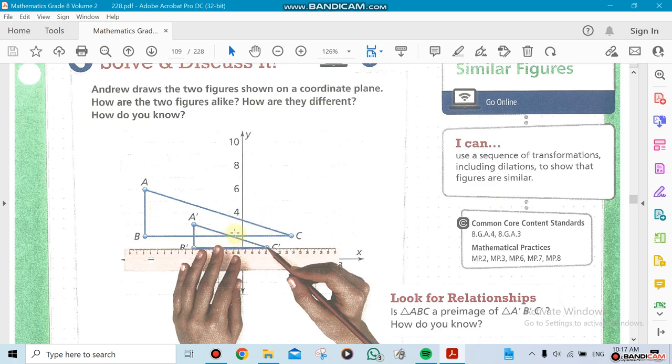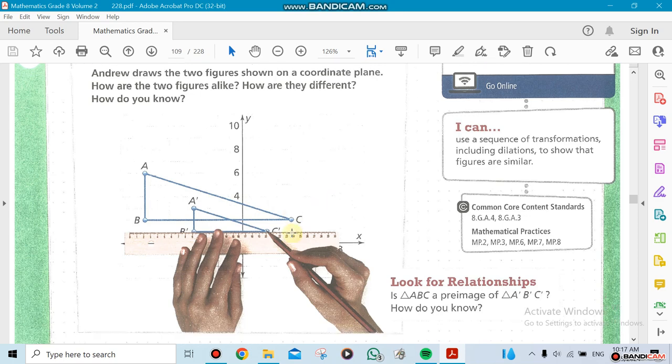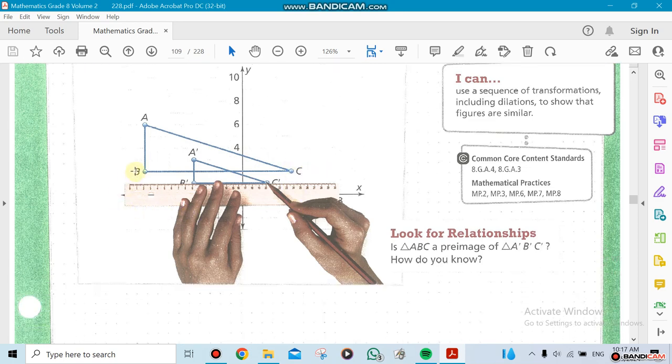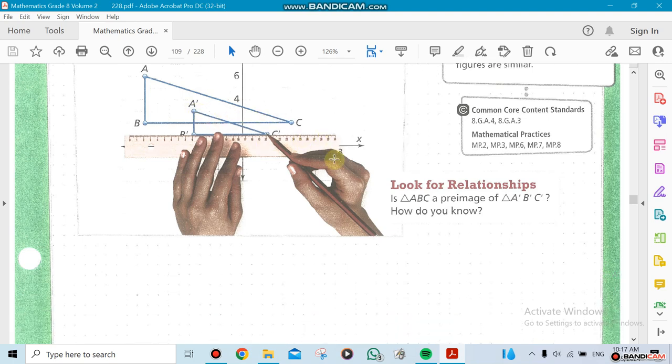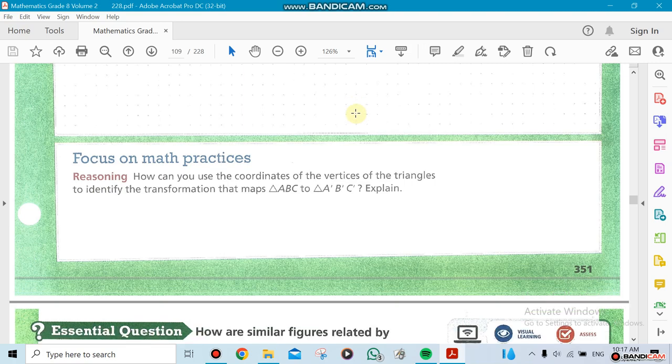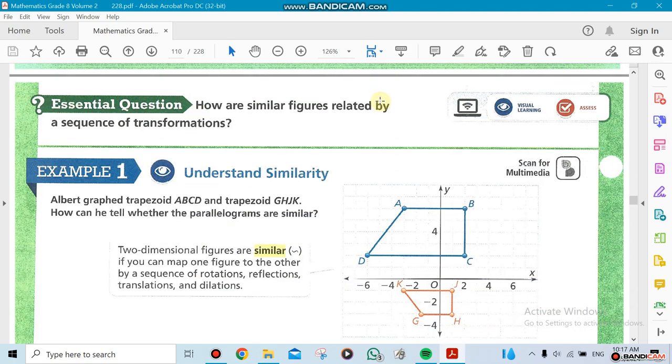For example, if I enlarge this figure here, A prime B prime C prime, and if it exactly matches with ABC, that means those are similar. So we're going to talk about proportions. If this side is twice as big as this side, this one has to be also twice as big as this side, and this one has to be twice as big as this side. That's how similar figures are.